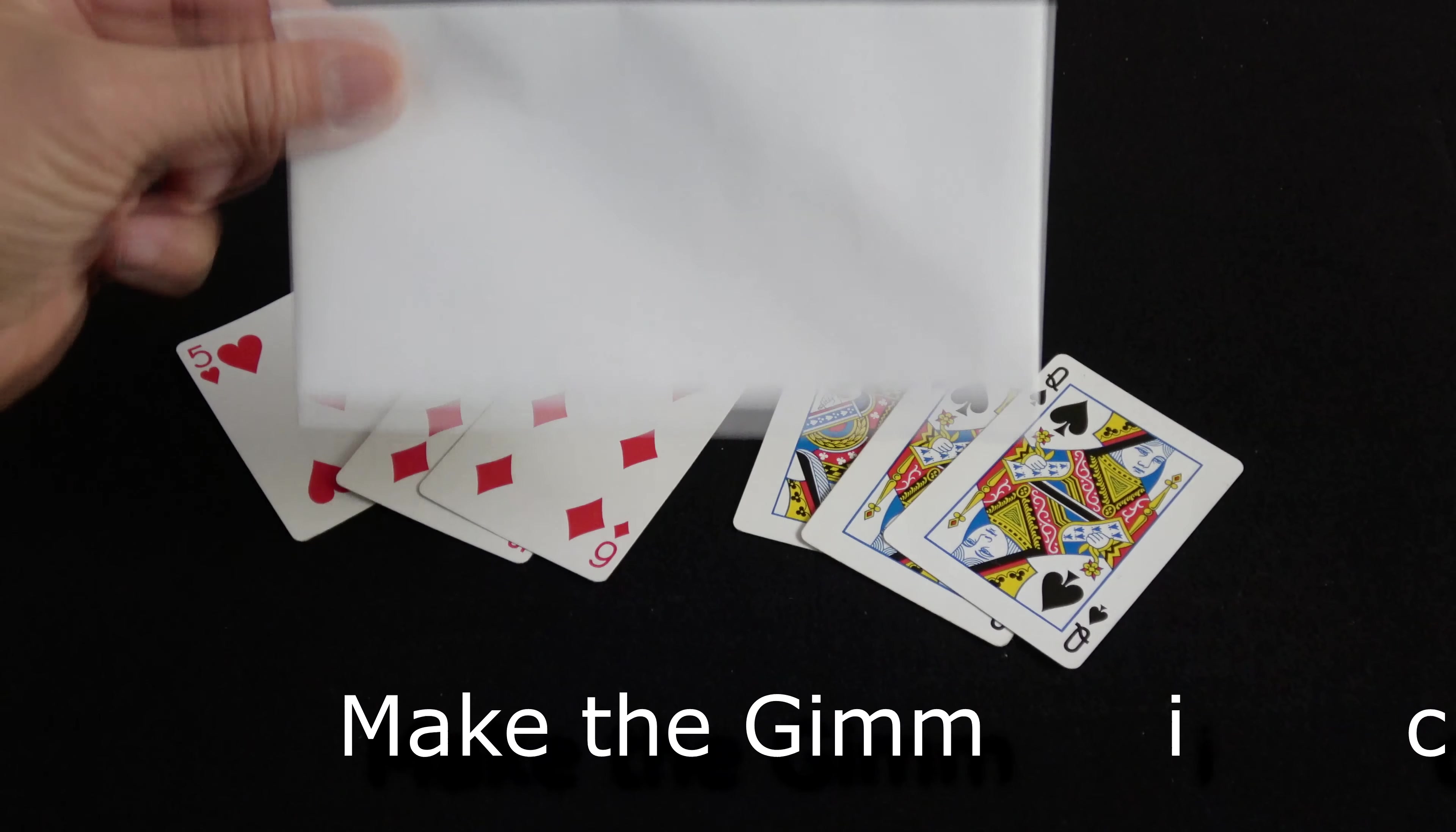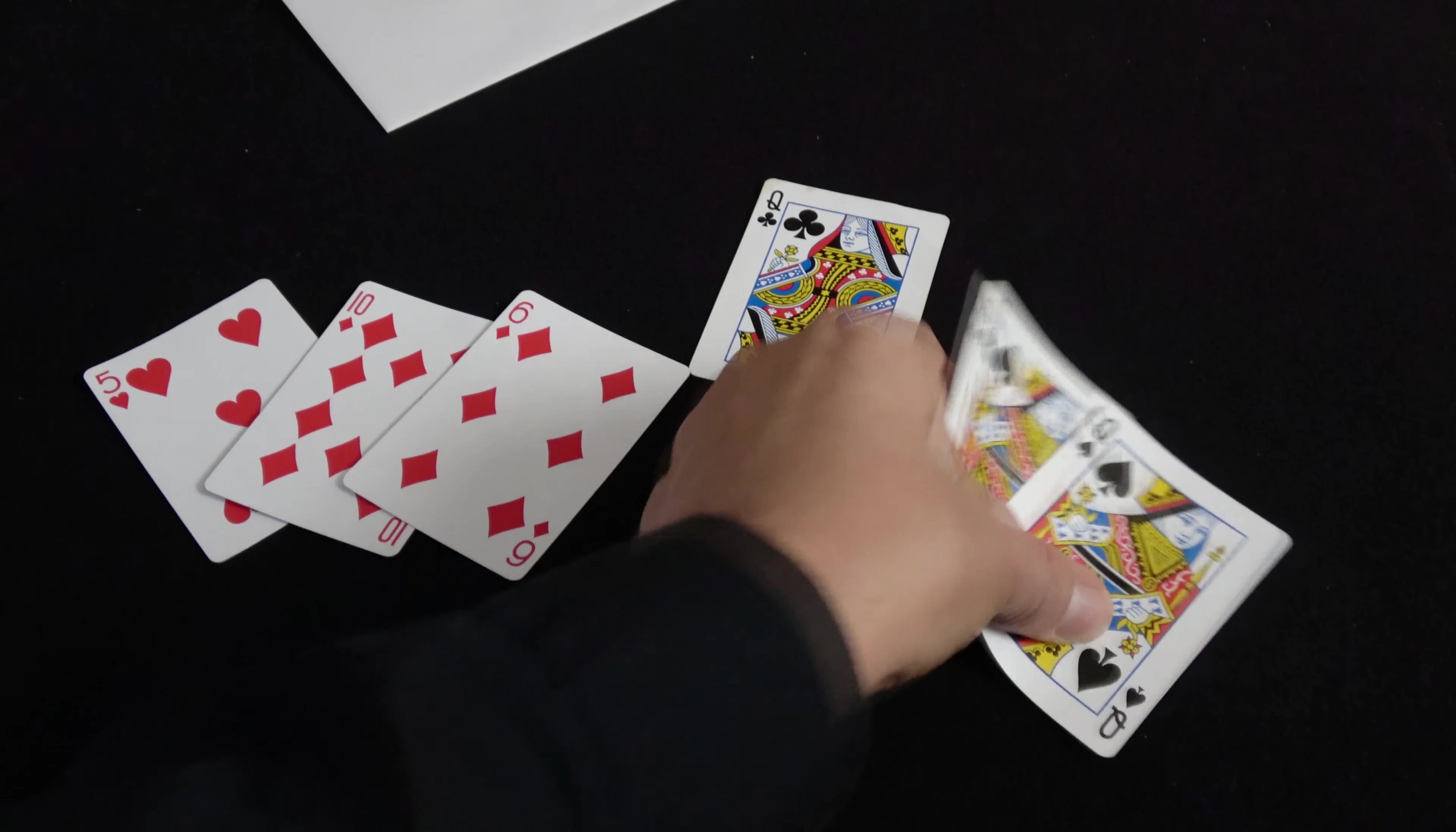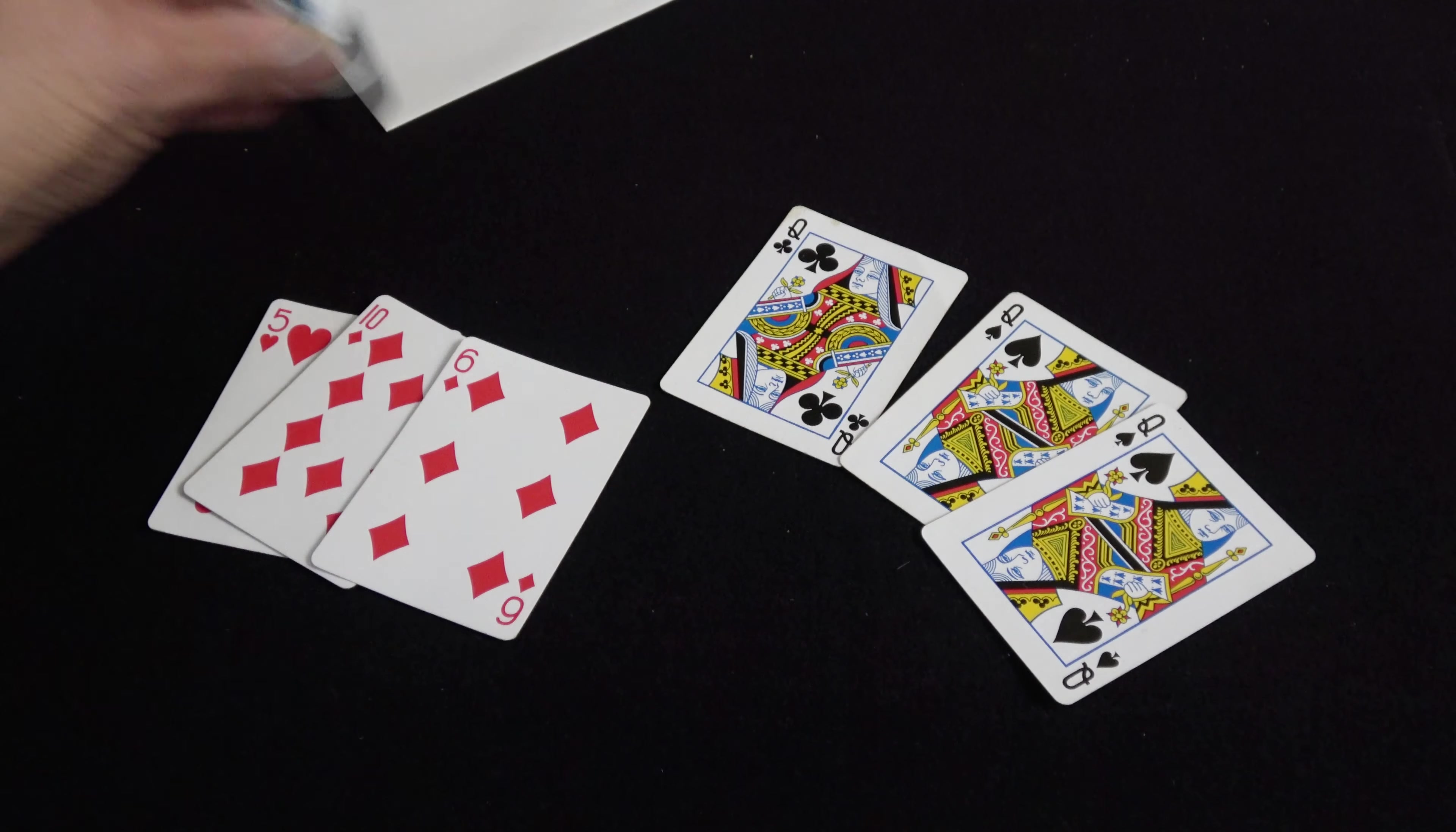For this trick, you're going to need an envelope, three different cards, and we're using queens here, but the key point is that you can use any cards you wish, but two of them have to match. In this case, I have two queen of spades and a queen of clubs. I like these to be queens or jacks or kings because I think it just plays a little better. You'll need scissors and glue.